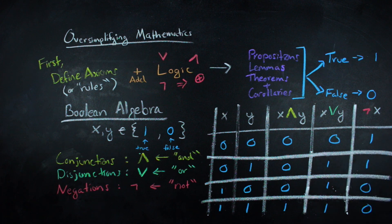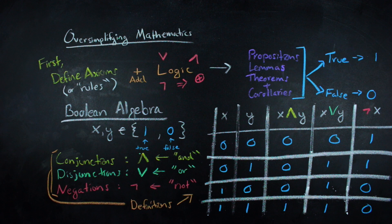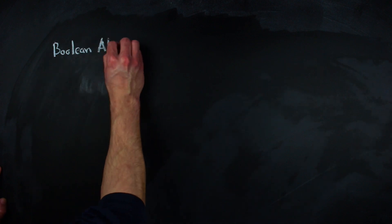When looking at the truth table for x or y, you might get tripped up by the true or true yields true, depending on your primary use of or in everyday speech. But this is how the disjunction operation is defined. It's an inclusive or. And that leads us to another way of thinking about these operations with sets.